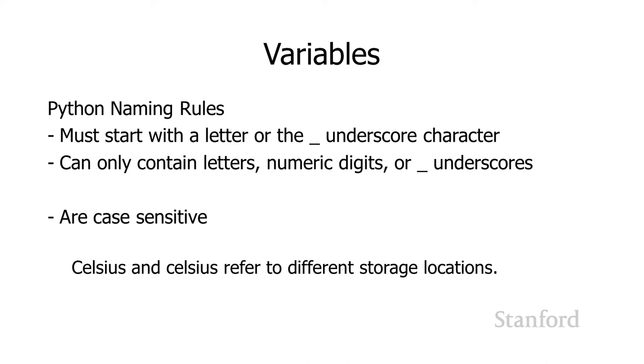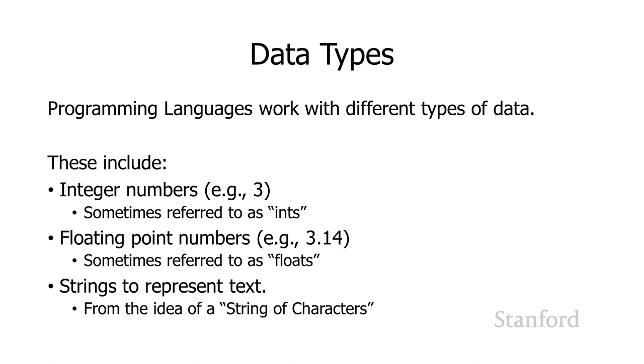Another issue that's going to come up is programming languages use different data types. In Python, we have integer numbers like, for example, three. These are sometimes referred to just shorthand as ints. If you hear somebody talking about an int in their program, they're talking about an integer value. We have floating point numbers like, say, 3.14. These are numbers with decimal points in them. These are sometimes referred to as just floats.